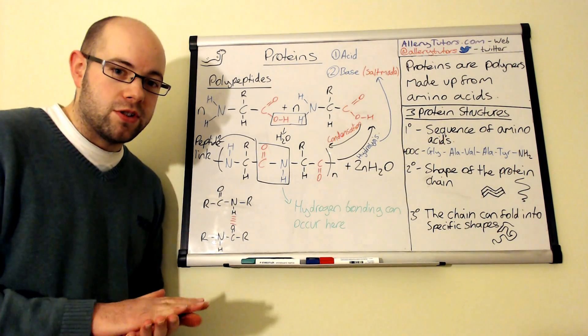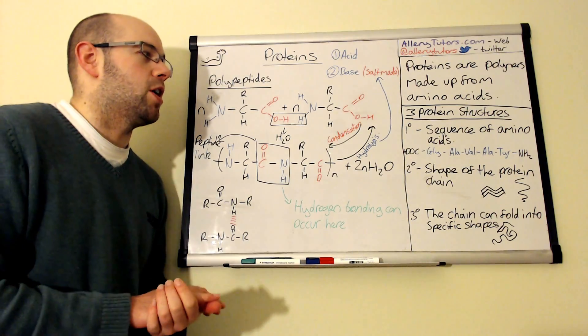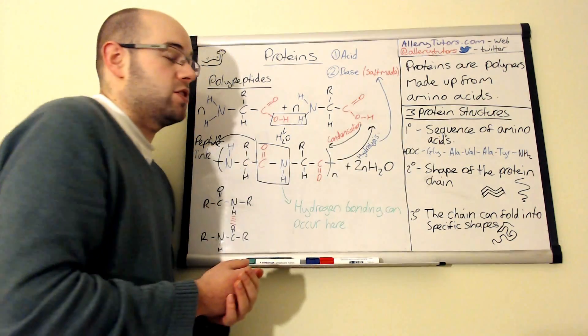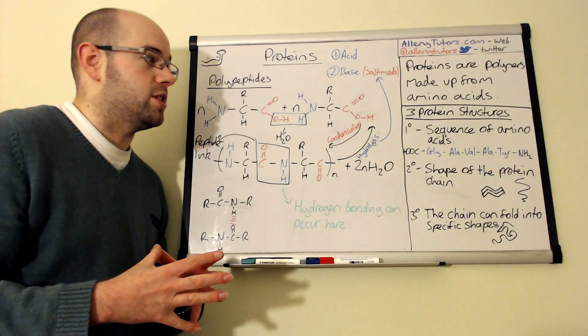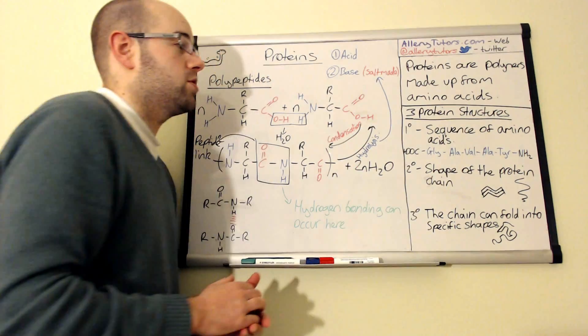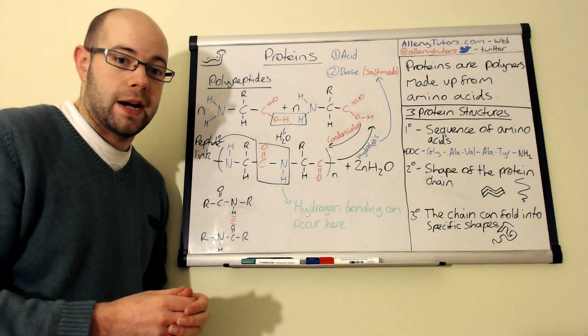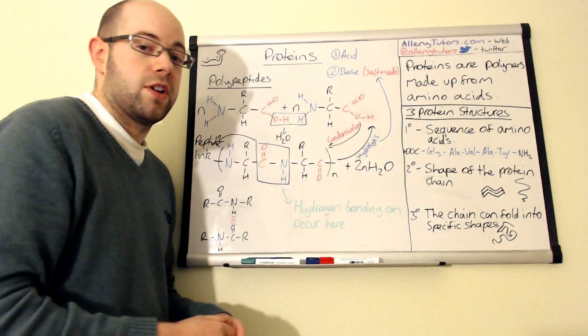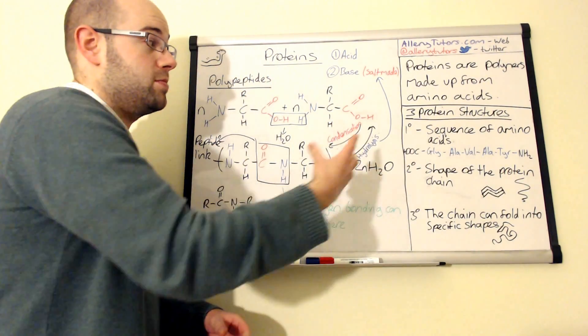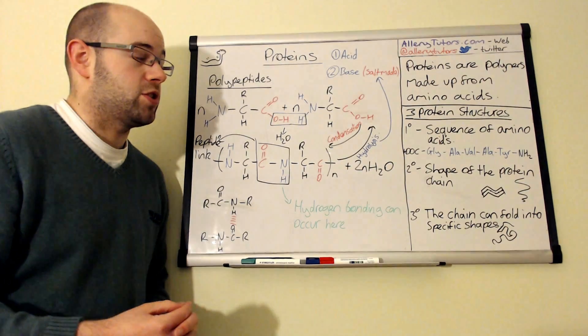In chemistry, you just need to know the first three, but there are more. There's actually four of them. We call this a primary protein structure. A primary protein structure is basically the sequence of amino acids. For example, we have a glycine, alanine, valine, etc. And we're going to go along like that, and that joins them together to form our polymer chain.